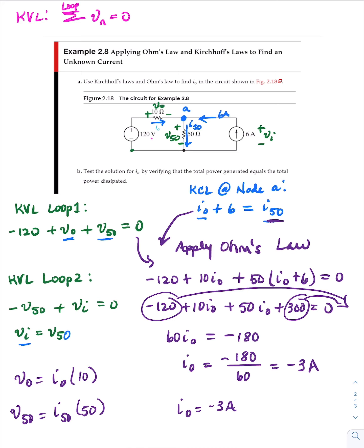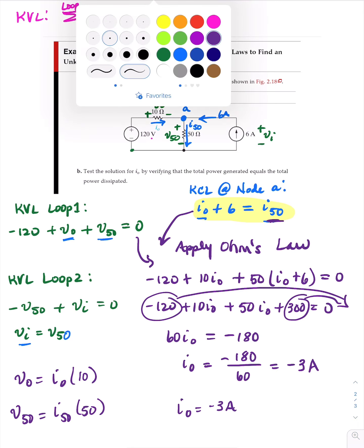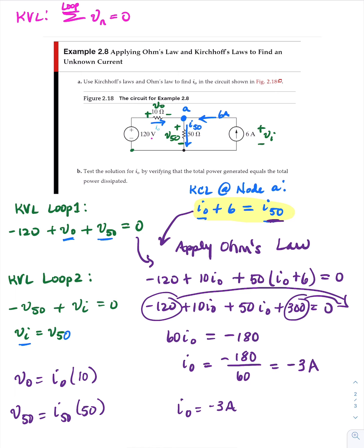Alright, if I sub zero is equal to minus three amps, then we know from the KCL equation that I sub 50 is equal to I sub zero plus six — that's minus three amps plus six — which is plus three amps. So we have found I sub zero, which we were asked to find.